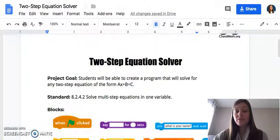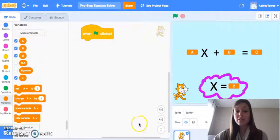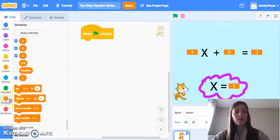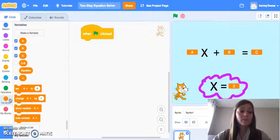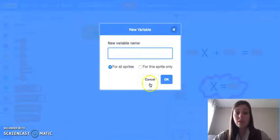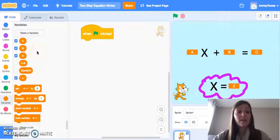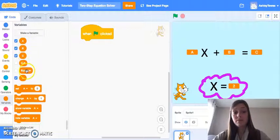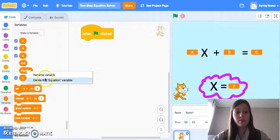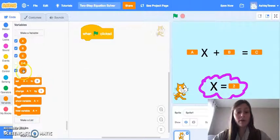So our very first step that you'll see in my program here is I have created a handful of variables, and I'll have you do the same. You'll click down here in variables and hit make a variable, and you can type in these names and hit OK. So we'll need an A variable, B, C, C minus B. We can get rid of this variable, and we will have X as our last variable here.